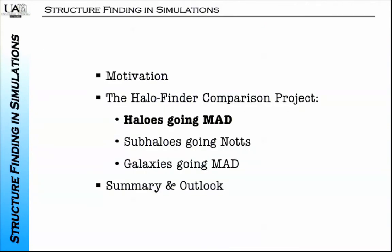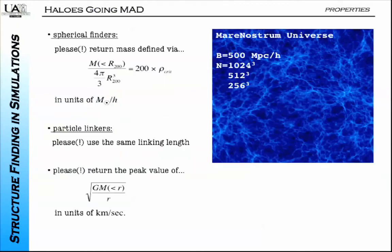Now let me step you through the plots. For 'halos going wild'—field halos in a large cosmological simulation—to avoid any ambiguities in halo definition, we asked all participants: please return mass defined via this equation. For those with particle-linking methods like friends-of-friends, we asked them to use this linking length. We further asked them to return the peak value of the circular rotation velocity, V_max.